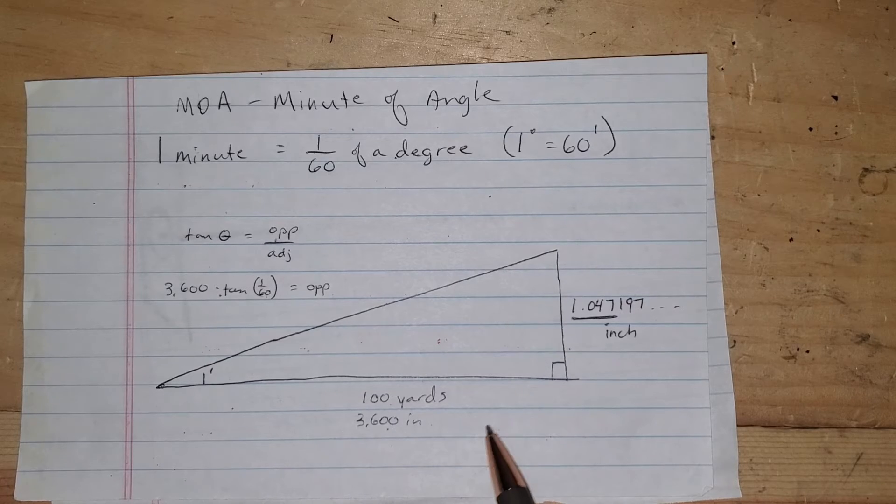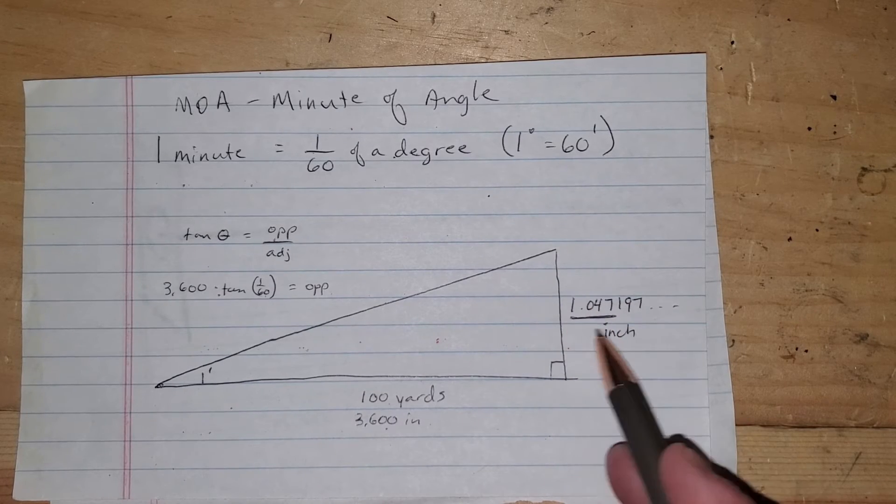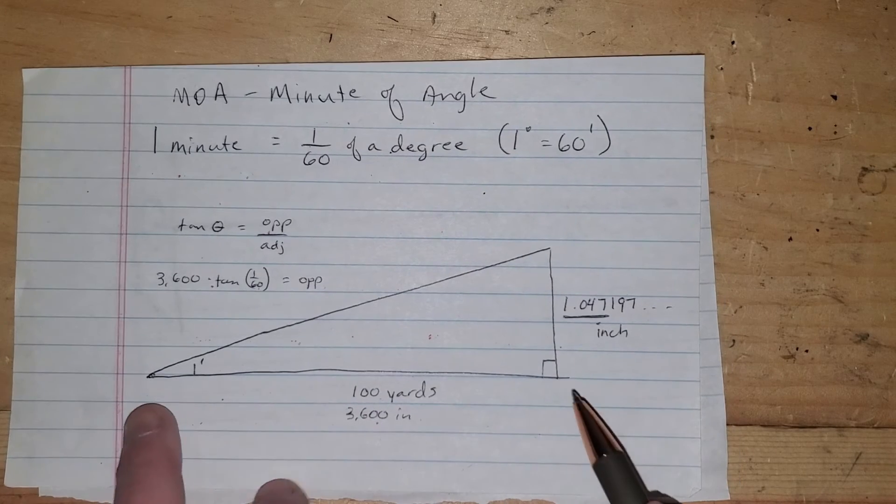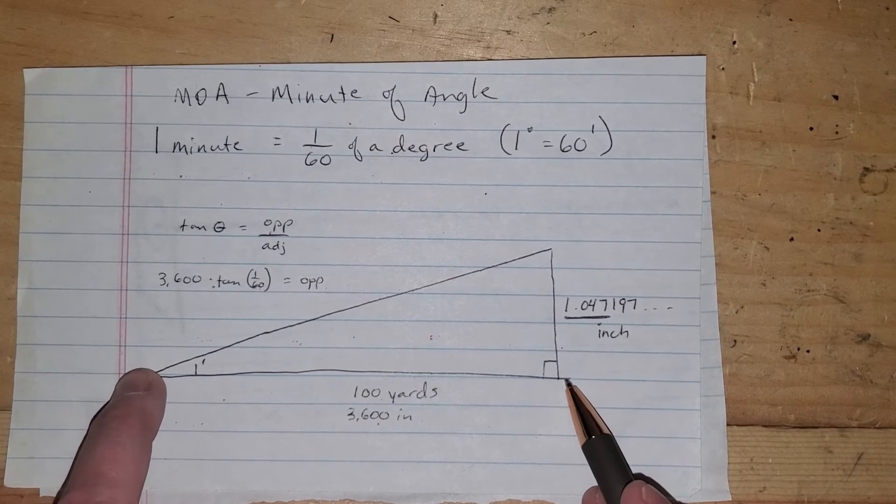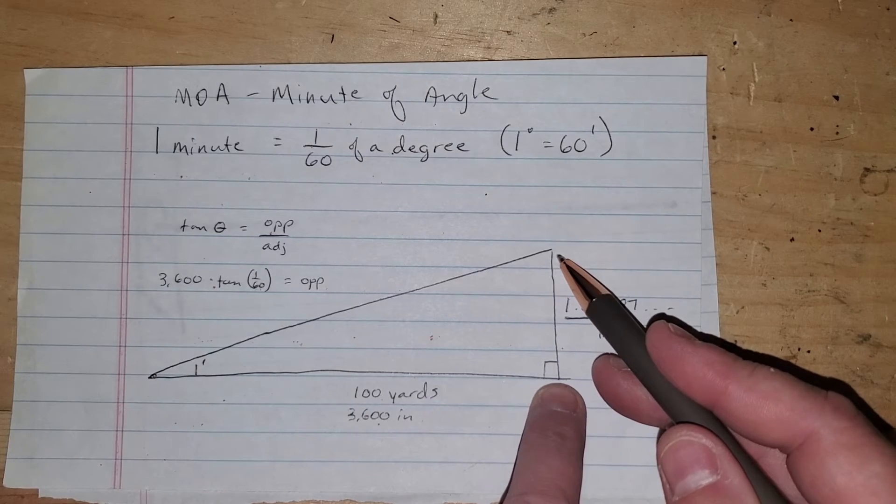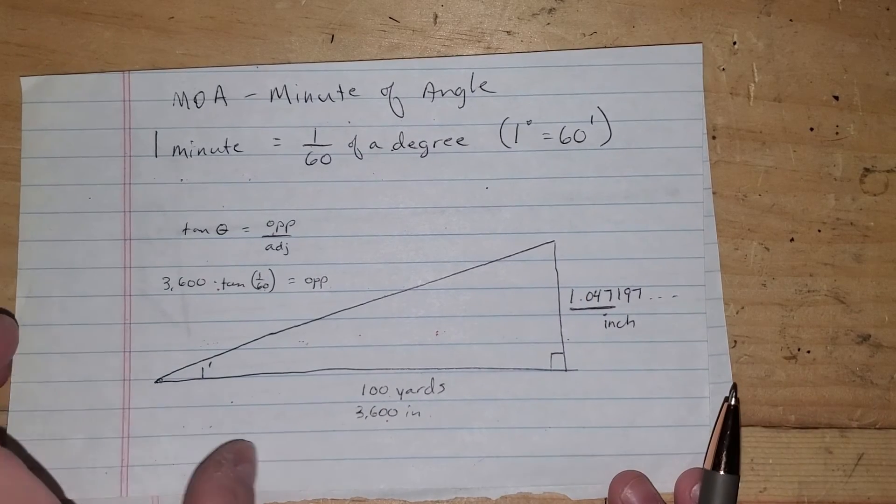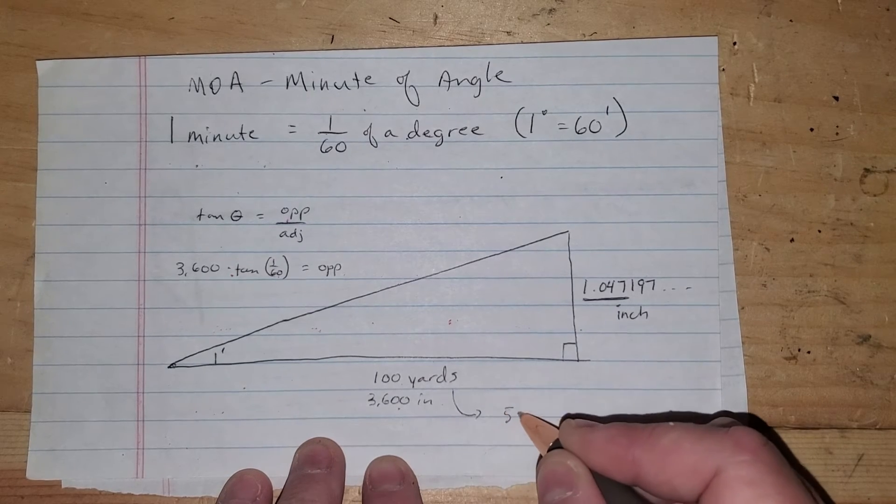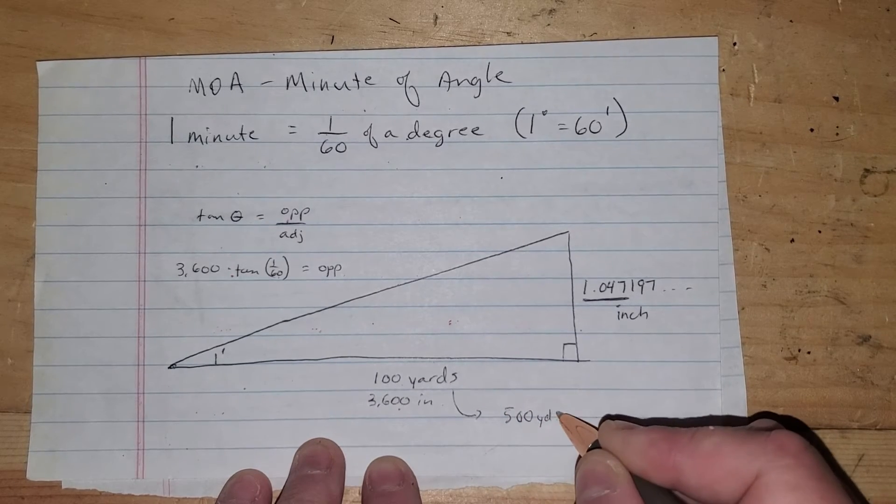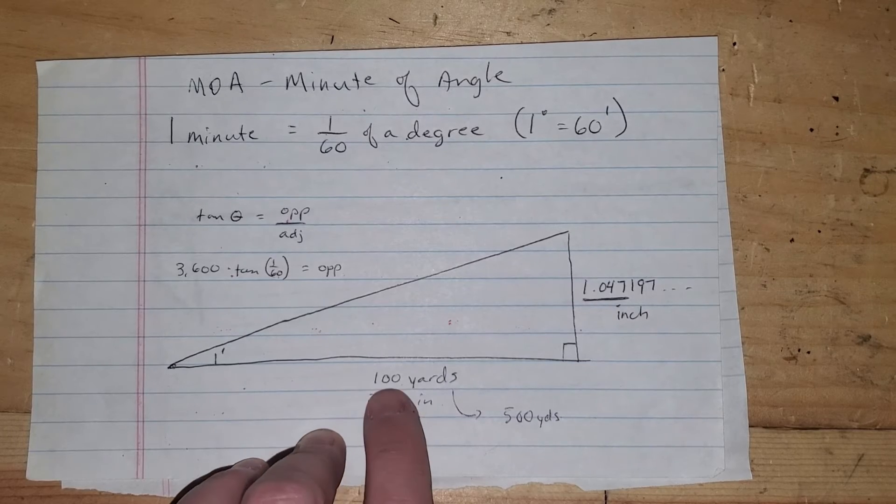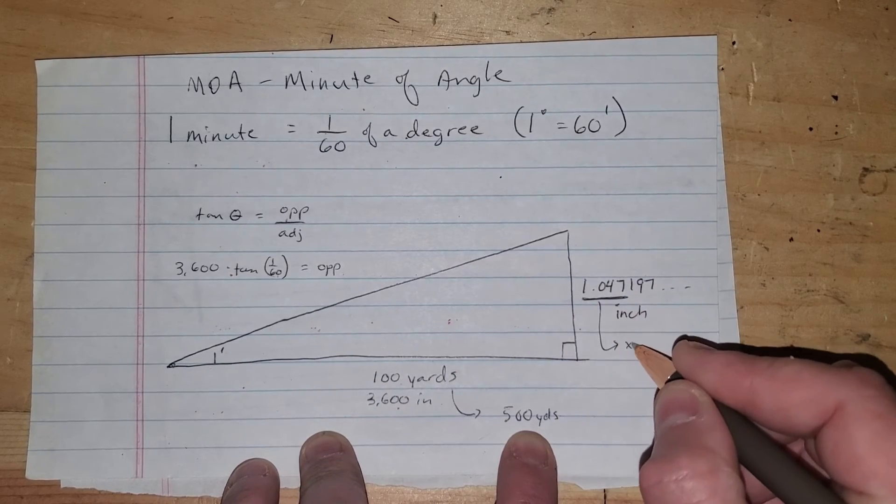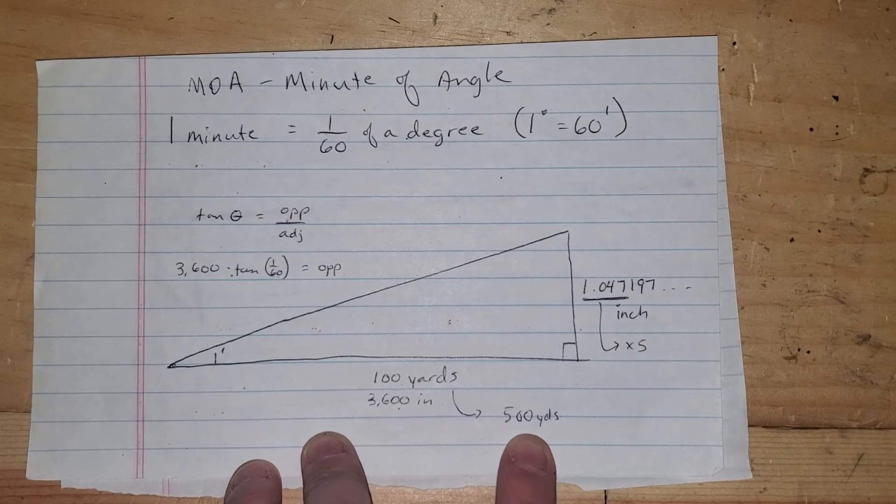Now, so first things first, not quite a 1 to 100 ratio like a lot of people will tell you online. Second of all is as you increase this distance, this distance increases at the same rate. So what that means is if I took this distance and made it 500 yards, five times as big then this would also be times five.